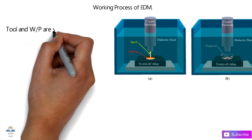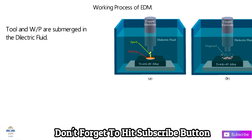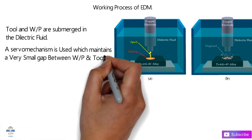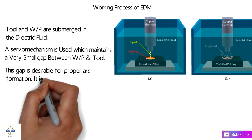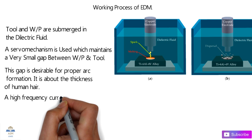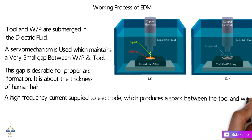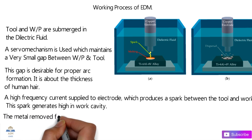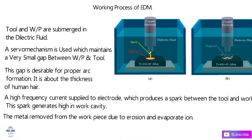This is a 3D image of the process. The tool and workpiece are both immersed in dielectric fluid, and the whole process is carried out in this fluid. A servo mechanism is used which maintains a very small gap between the workpiece and the tool — this gap is critical for proper arc formation and is about the thickness of a human hair. The high-frequency current supplied to the electrode produces a spark between the tool and the workpiece, which generates heat, and the metal is removed from the workpiece by erosion and evaporation.